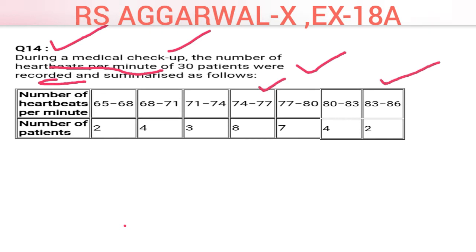You are given a table with number of heartbeats per minute and number of patients. In this question you have to calculate the arithmetic mean. Exercise 18A is totally based on arithmetic mean — all questions in this exercise are about arithmetic mean.